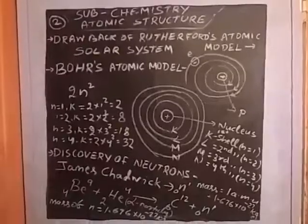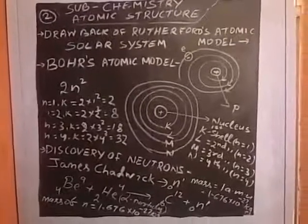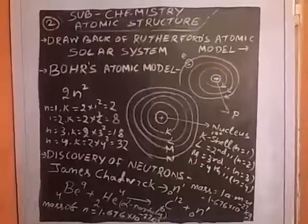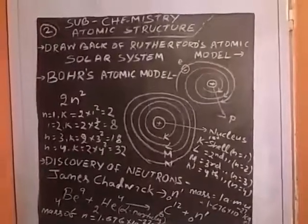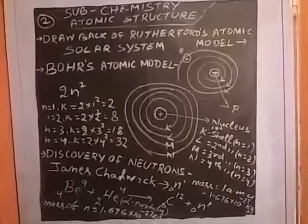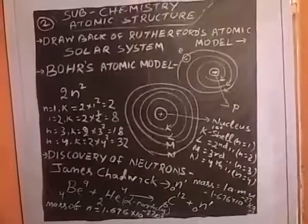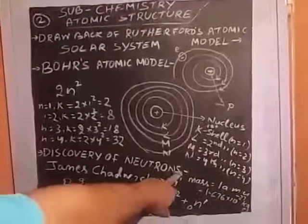It is located at central part of the atom or in the nucleus. Its mass is 1.676. Its charge is nothing or zero. So that is why it is denoted by 0 and 1.